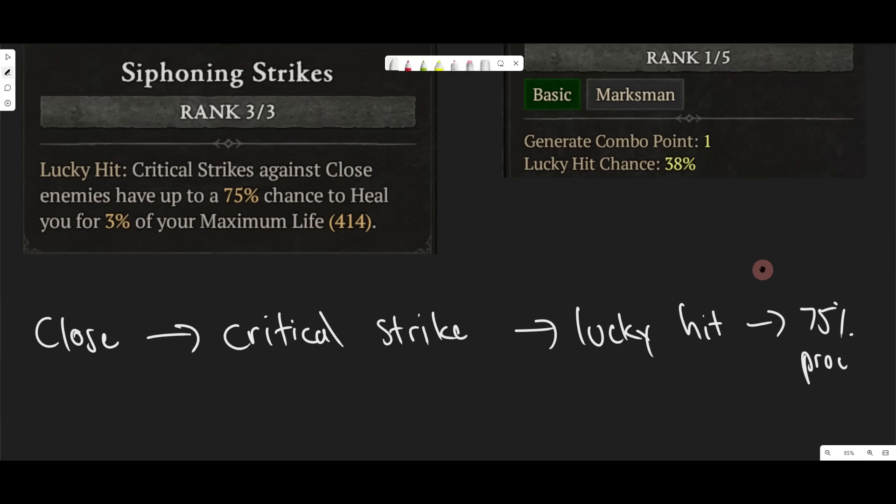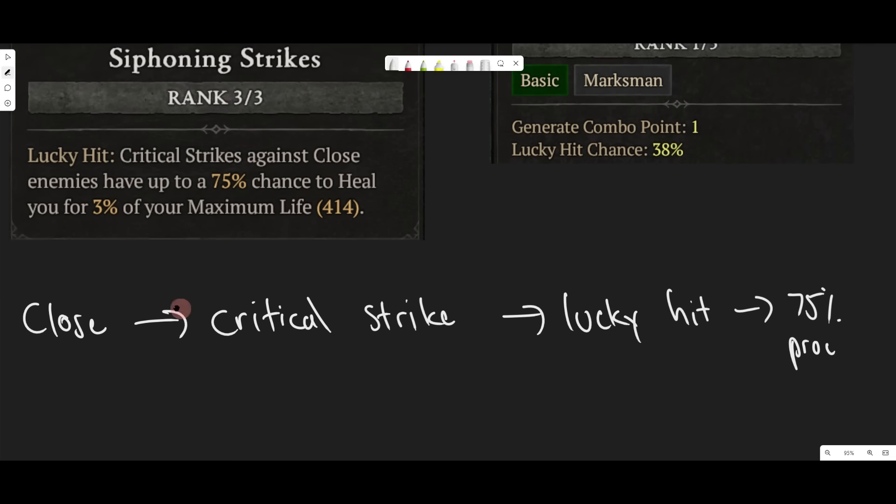Then if you get a Lucky Hit, then you have a 75% chance to proc Siphoning Strikes. So just a few multipliers there. So if we're close, well, then we're close, okay? Then if we critical strike, so let's say we have, let's say a 50% critical strike rate.